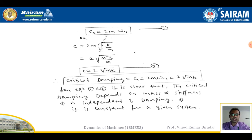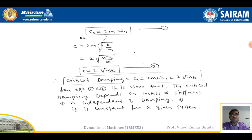Since ωn = √(k/m), we can also write Cc = 2m·√(k/m) = 2√(mk) — this is equation number two. From equations one and two, it is clear that the critical damping depends on mass and stiffness, and is independent of the damping system. It is a constant for a given system.